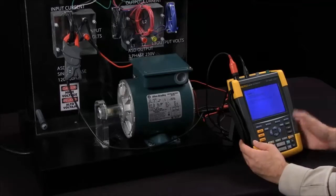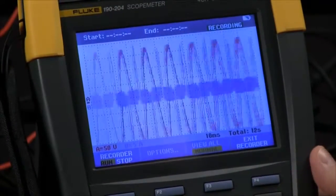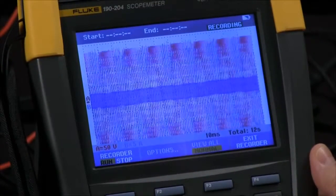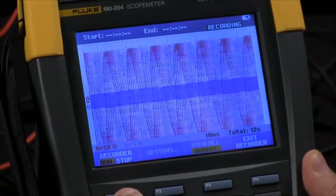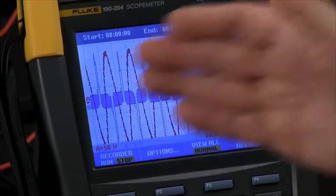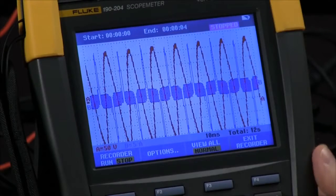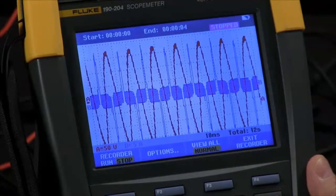We can also go back and do a scope record by selecting that. We are now tracing across the screen. I can stop that and now we can see that there is the waveform saved into deep memory and is frozen on the screen.